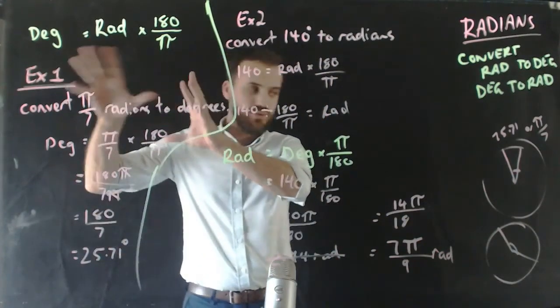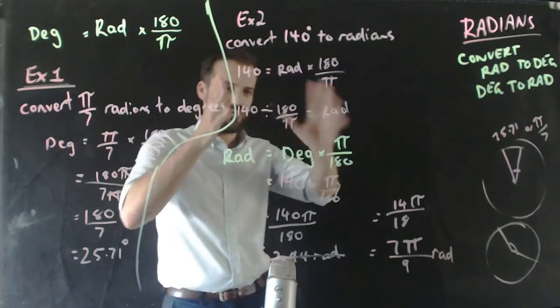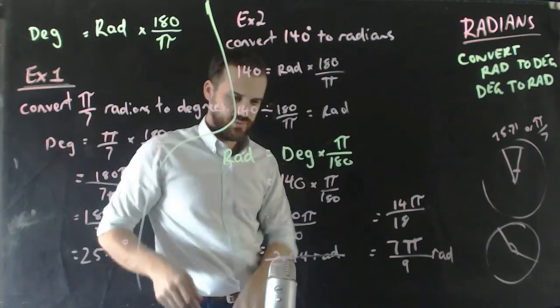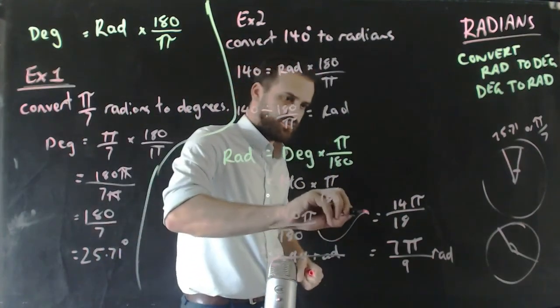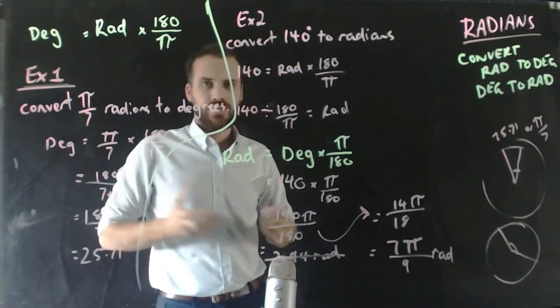Alright, that's converting degrees to radians, radians to degrees. Let's give it a try.